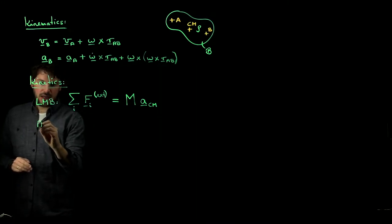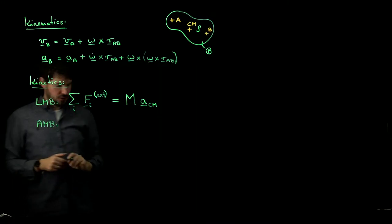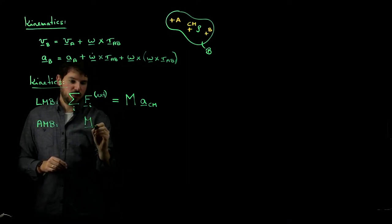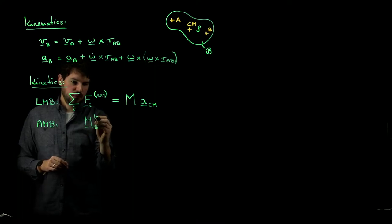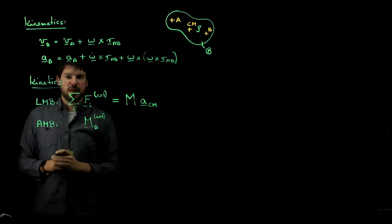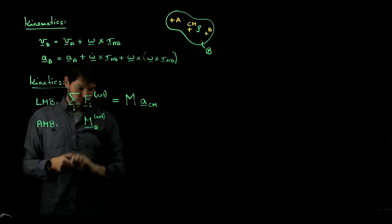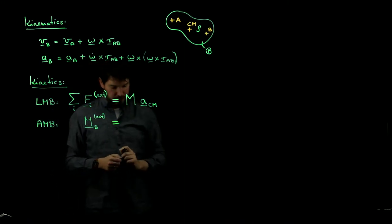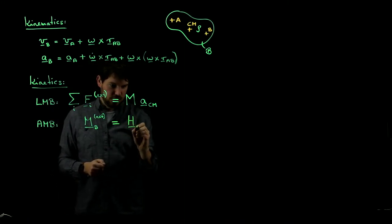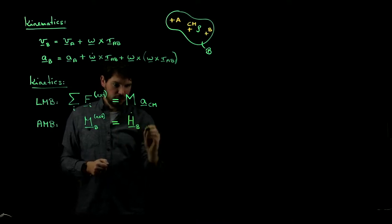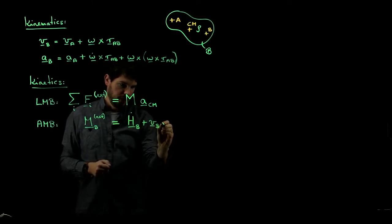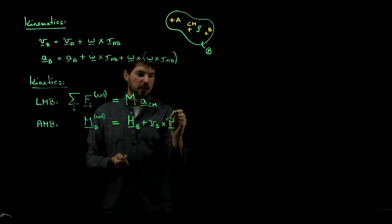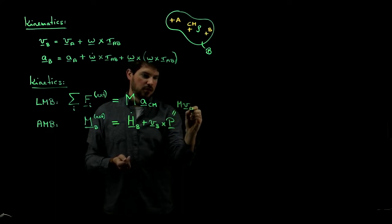And then the AMB, angular momentum balance, became a little more complicated here. In principle, it reads the same as before, namely, the net moment applied with respect to point B. In principle external, but again, we don't write it down because all forces we consider for us are external over here. And this is nothing else but the rate of change of angular momentum, Hb dot, plus velocity of point B cross P. And this P over here is now the total linear momentum of the body. So this would be the total mass times the velocity of the center of mass.